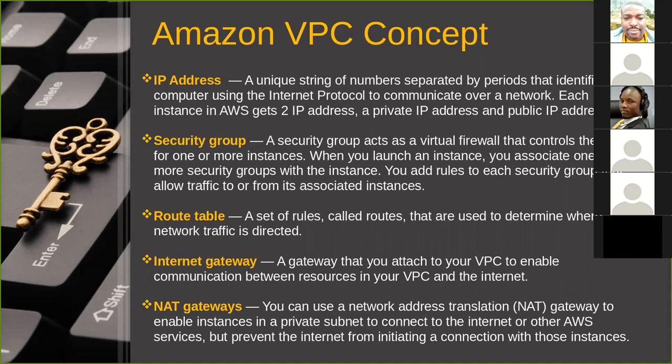The internet gateway is usually attached to a VPC and it enables communication between resources in your VPC and the internet. There's also something called NAT gateways, which are very essential for private subnets that need to access the internet but don't necessarily need the internet to access them. Private components in private subnets can actually route to the internet through the NAT gateway.